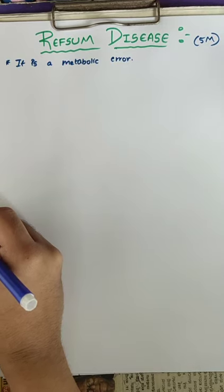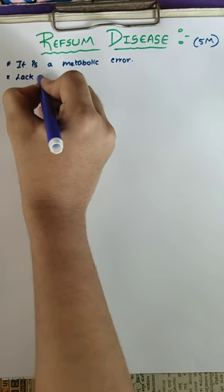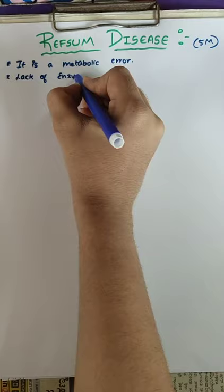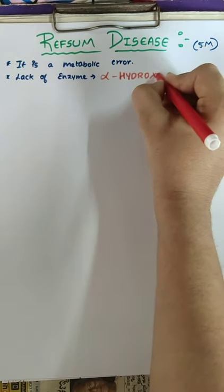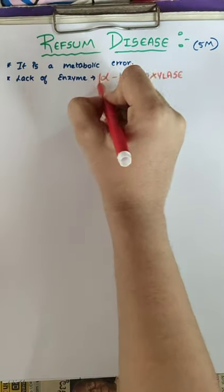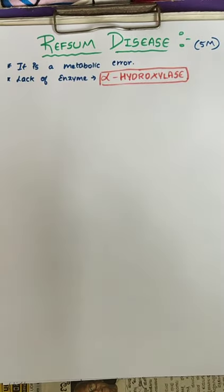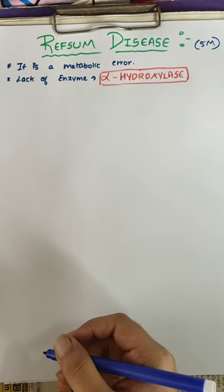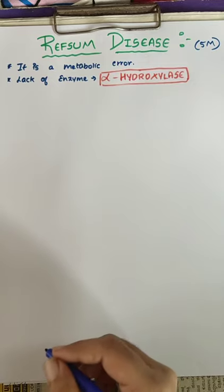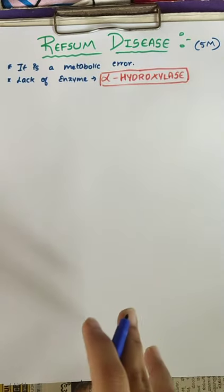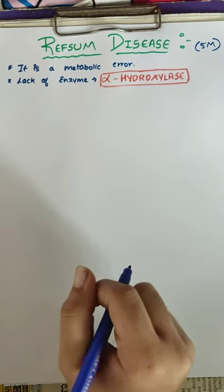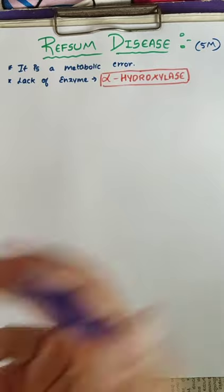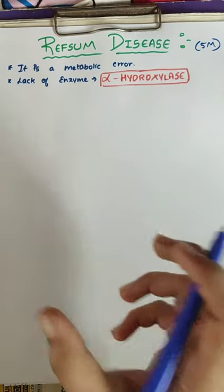Refsum disease occurs due to the lack of enzyme alpha hydroxylase. Because of this, there will be absence of alpha oxidation in our body. Alpha oxidation requires this enzyme, but this enzyme is absent, so alpha oxidation will not take place.